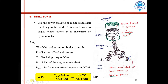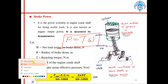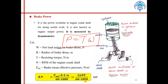Another equation for power is: power equals torque multiplied by omega, where omega equals 2πN/60. So brake power can also be found as 2πNT/60, where T is torque and N is number of revolutions per minute.